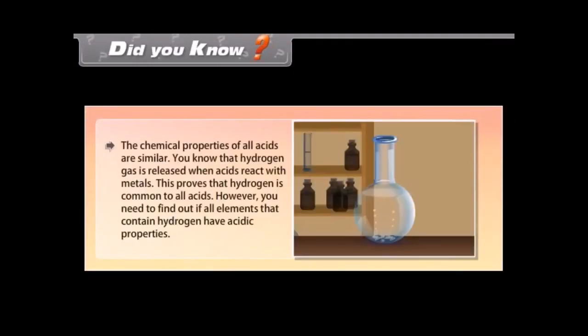Did you know? The chemical properties of all acids are similar. You know that hydrogen gas is released when acids react with metals. This proves that hydrogen is common to all acids. However, you need to find out if all elements that contain hydrogen have acidic properties.